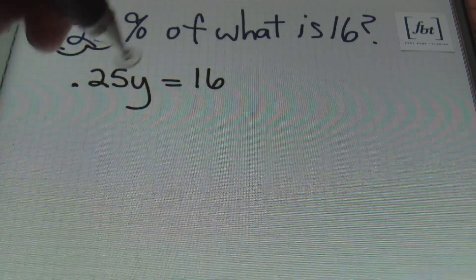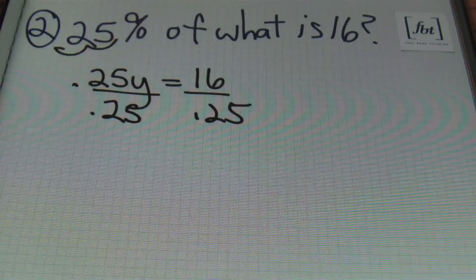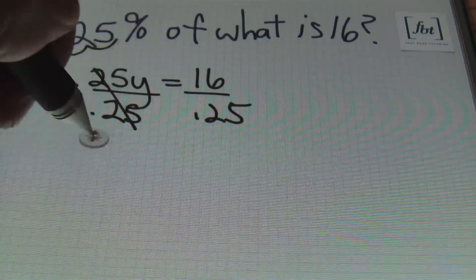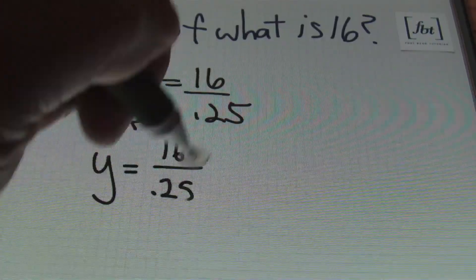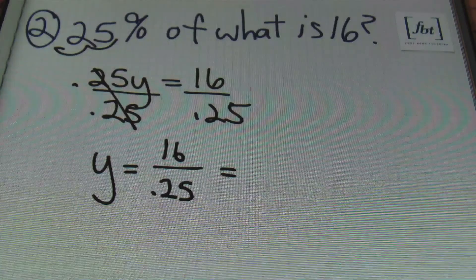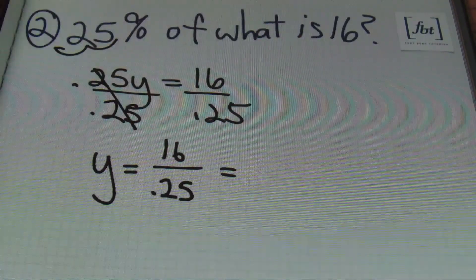Let's change this into an equation. We'll be converting this percent into a decimal, so that'll be 0.25 times 'what', which is any variable that we choose. So I'm going to choose y. 'Is' is the equal sign, and then I have the number 16. From here, I'm going to divide both sides by 0.25.